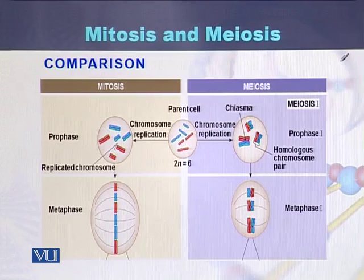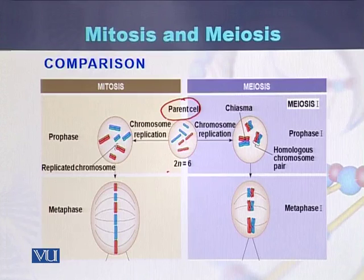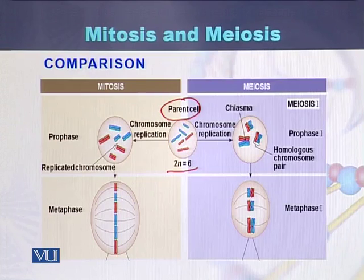If we see in this diagram a comparison between mitosis and meiosis: initially there was a parent cell. This parent cell has six chromosomes and is diploid, because it is 2N with six chromosomes arranged as three pairs. These three chromosomes are homologous to each other.